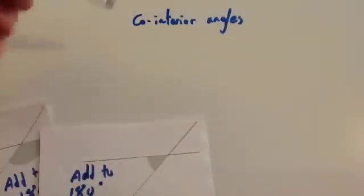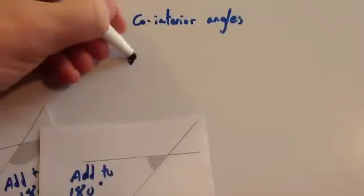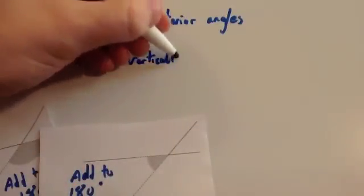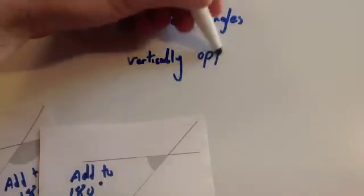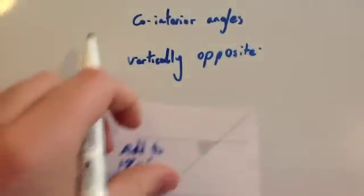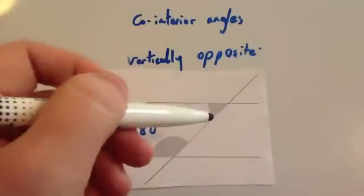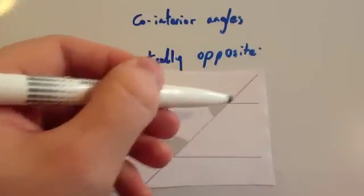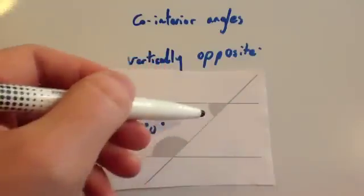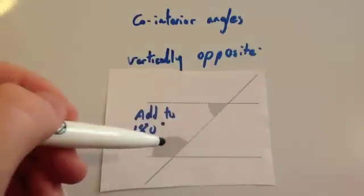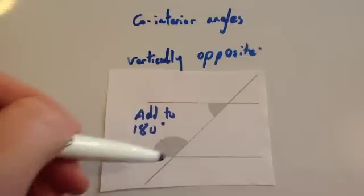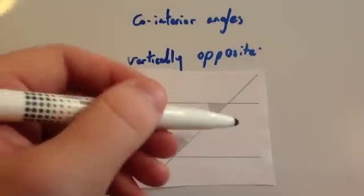For this video, you will also see vertically opposite angles. There's a video on vertically opposite angles, but it's just saying that this angle here would be the same as this one — the opposite angles are the same whenever two lines cross. So these two would be the same, these two would be the same, these two would be the same, and finally these two would be the same.